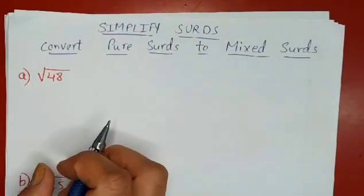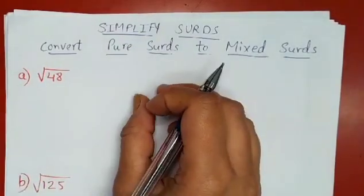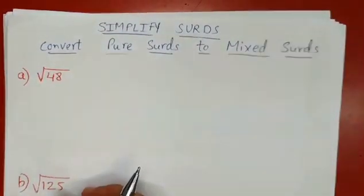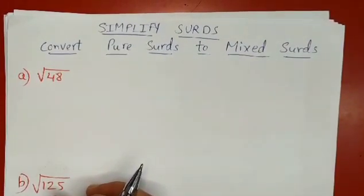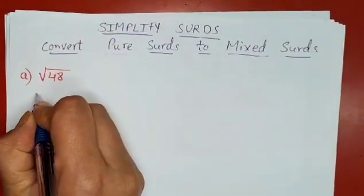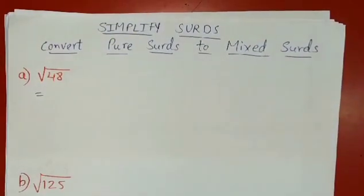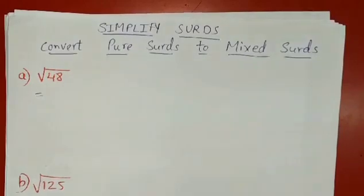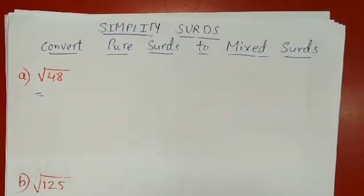In order to convert pure surds to mixed surds, we have to think of two numbers. By multiplying those two numbers we get this number, but the condition is that out of those two numbers, one number should be a perfect square number. And for choosing the perfect square number, we should choose the largest perfect square number.